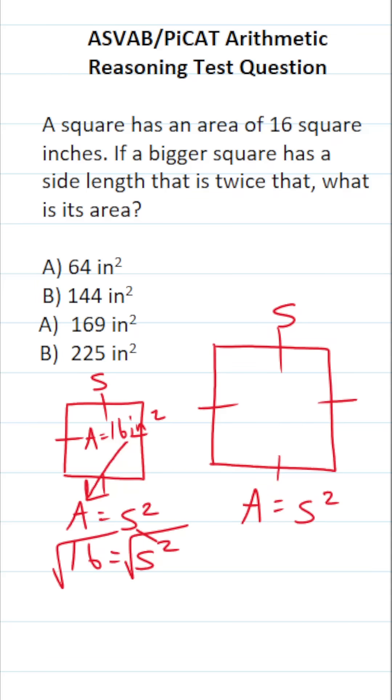we're going to take the square root of both sides. In doing so, this crosses out. The square root of 16 is 4. So the side length of this smaller square is 4 inches.